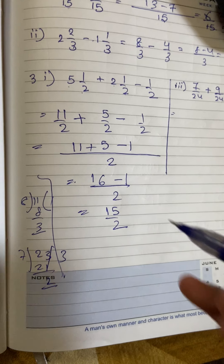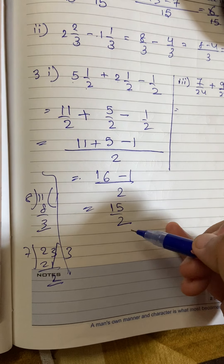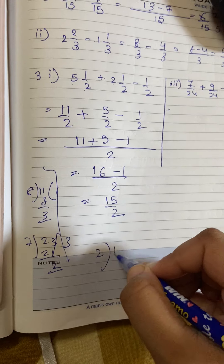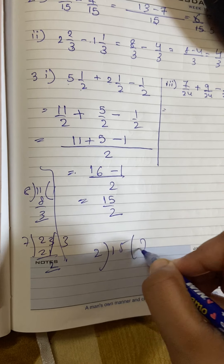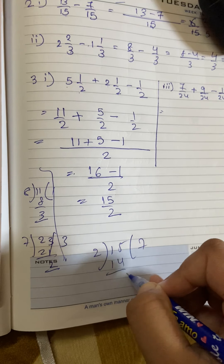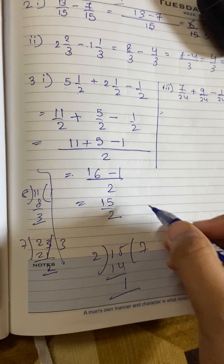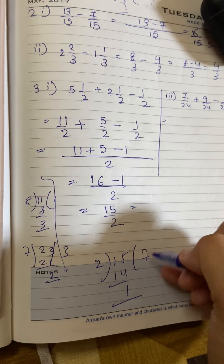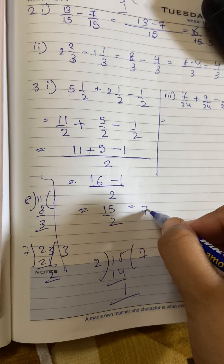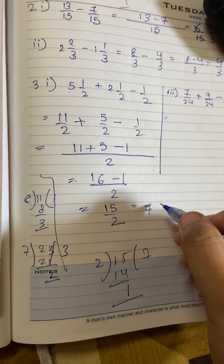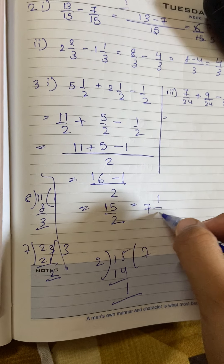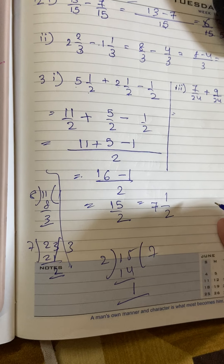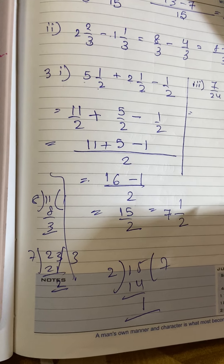This is an improper fraction since the numerator is bigger, so we divide by 2. The answer: the quotient goes to the side as the whole number, the remainder goes on top, and the denominator goes below.